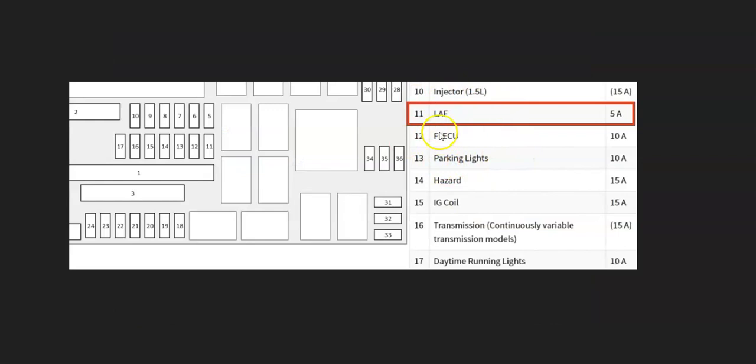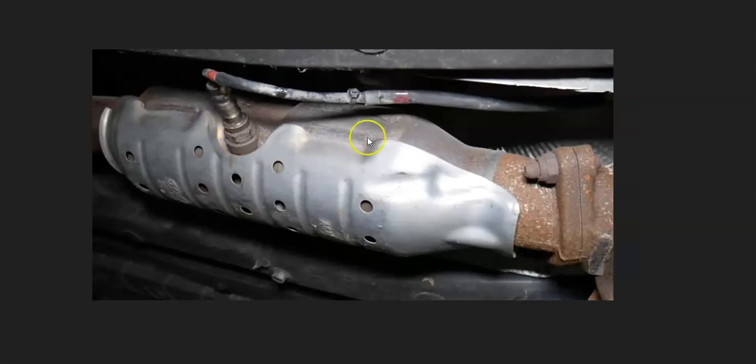Also keep in mind that these can be on a fuse. For example, here's a 2016 Honda Civic and it's on this number 11 LAF fuse. Sometimes it can be kind of vague which fuse it's on, but they're usually on a fuse so that is something to keep in mind.